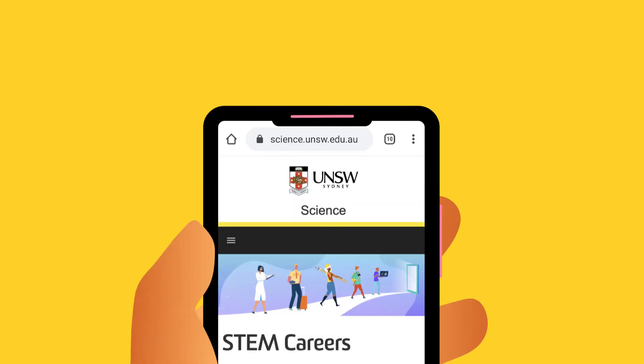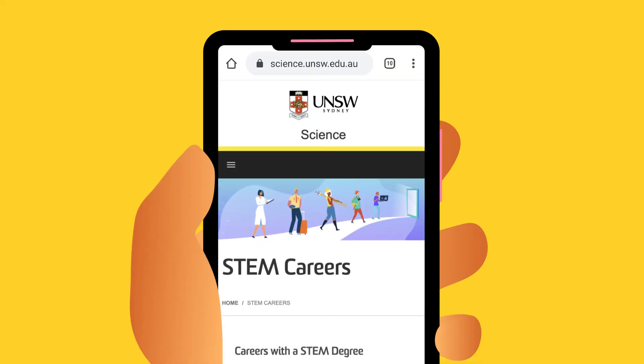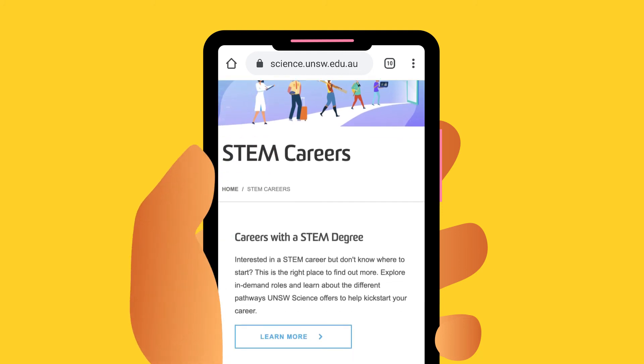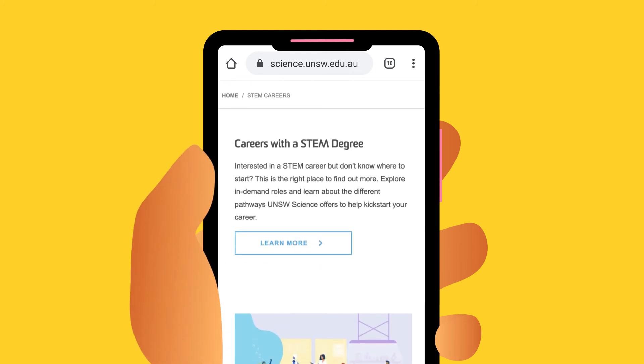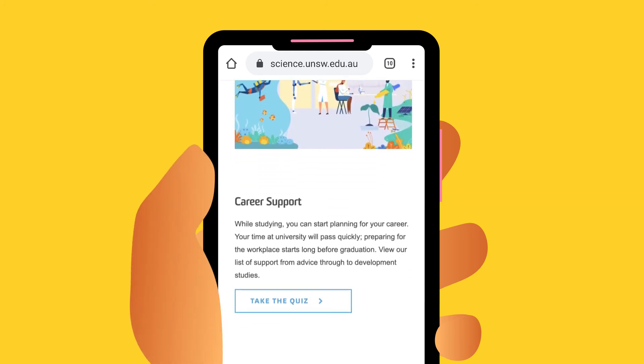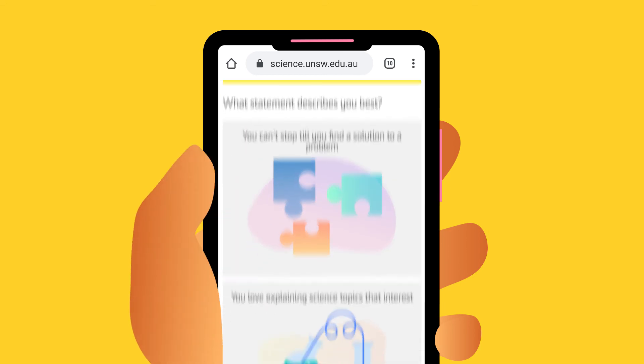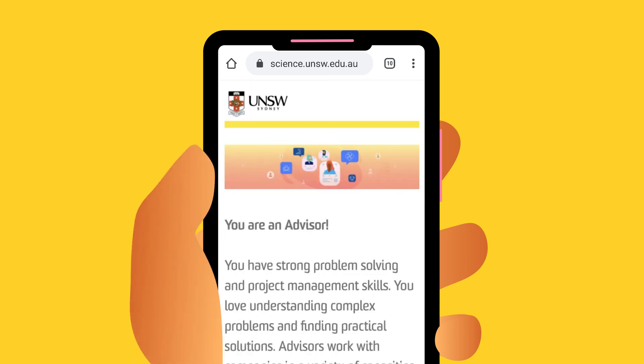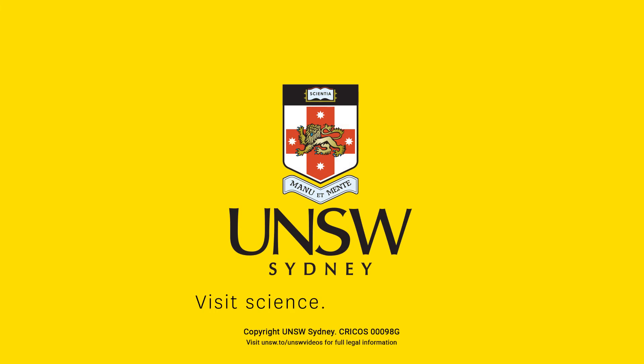Want to find out more? Visit the UNSW Science Careers page online and discover tips to help you get started in a STEM career. And why not try our fun quiz to see which areas might best suit you? Visit science.unsw.edu.au